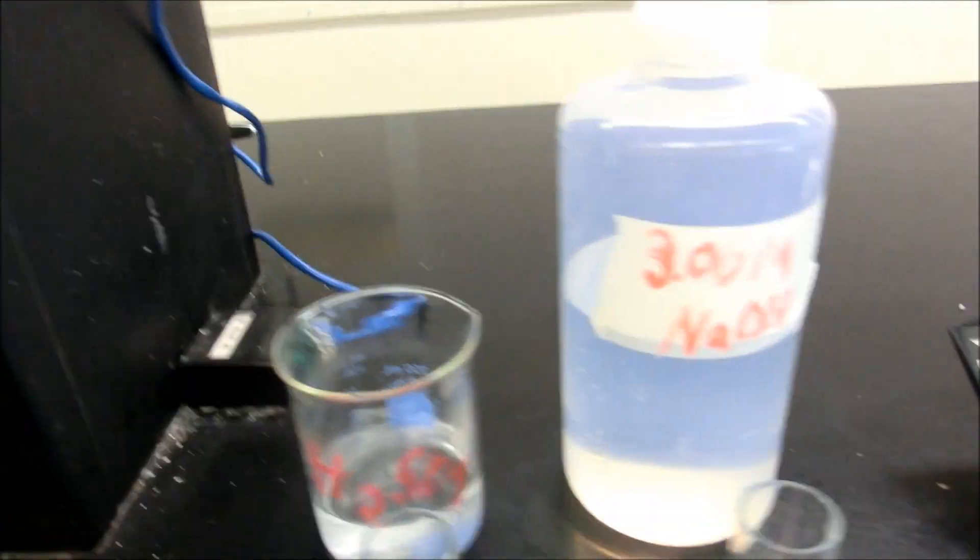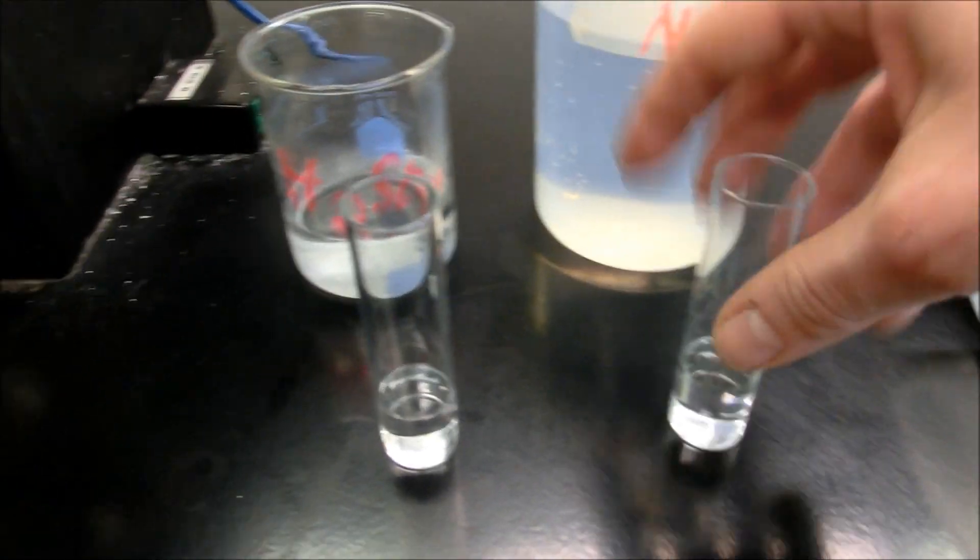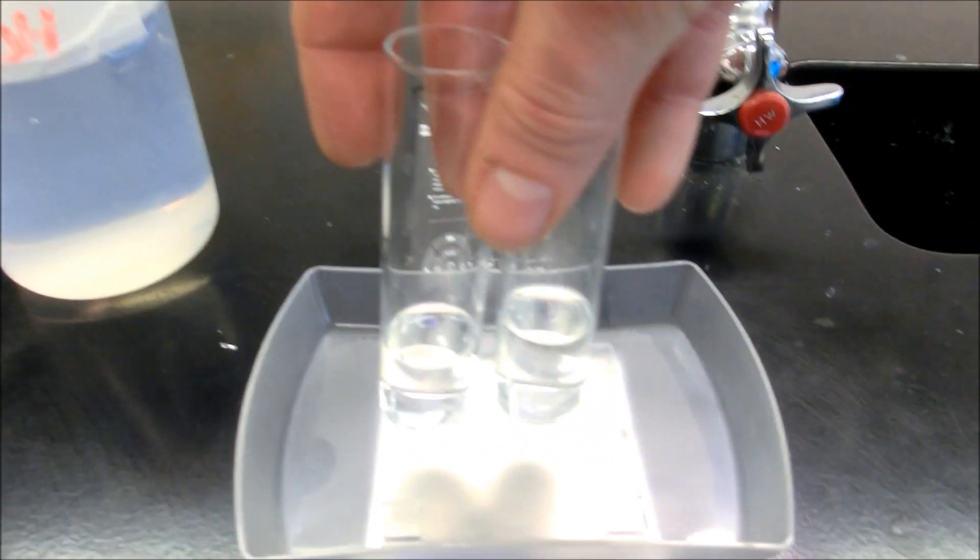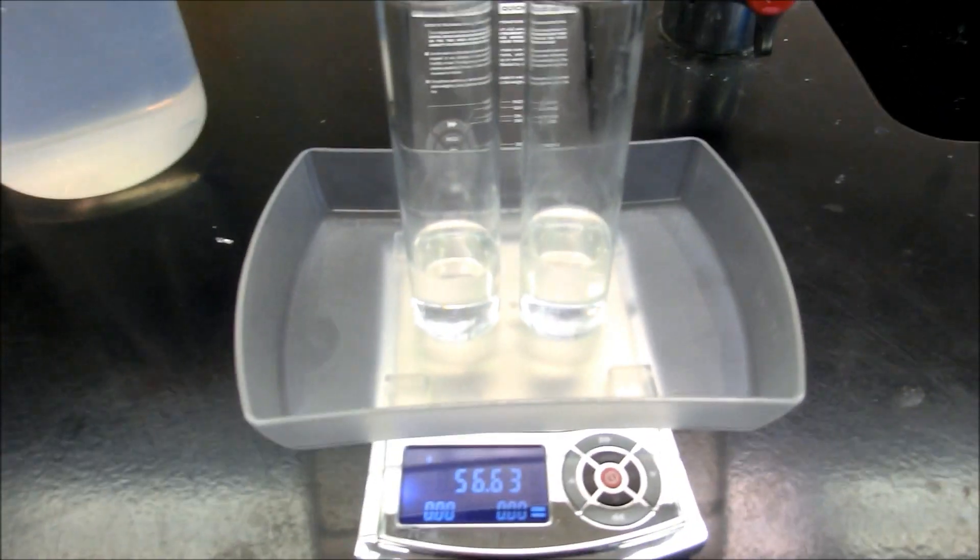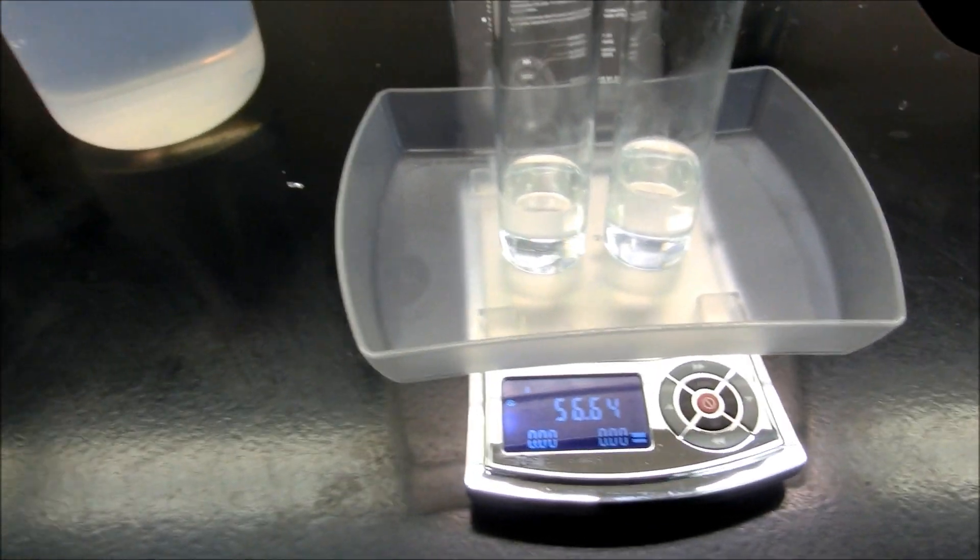We've got sulfuric acid and sodium hydroxide. I've poured a few of those things already into those two containers. And if we check out the mass of those, you'll notice that the mass ends up being 56.64 grams.